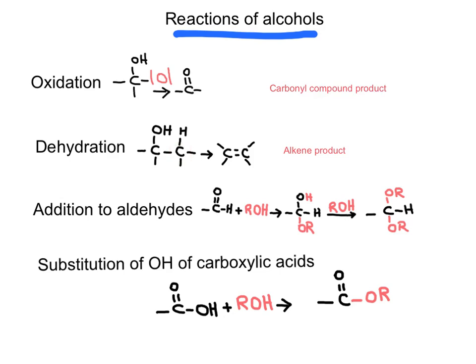Another reaction is the addition of aldehyde to an alcohol. In this case, the product will be called a hemiacetal, and if the reaction continues with an excess of the alcohol, it will produce an acetal. This reaction will be discussed in one of the coming chapters. Another reaction is the substitution of the hydroxyl group from a carboxylic acid by an OR group from an alcohol to produce an ester.